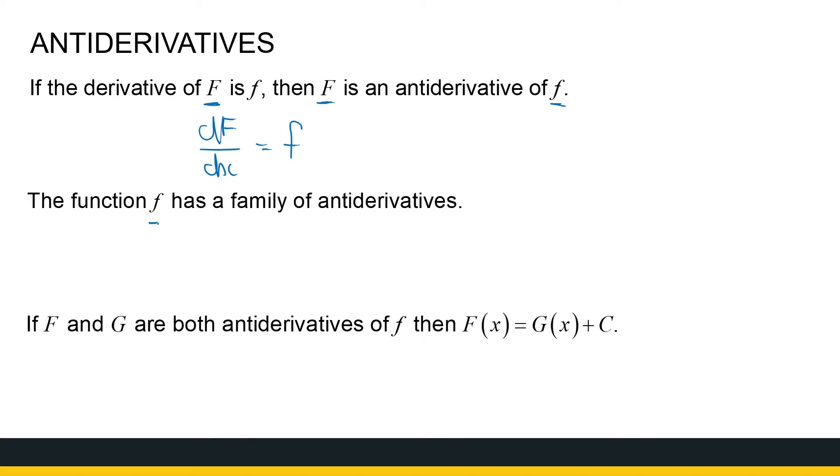Now this function f has a whole family of antiderivatives, which we've seen a couple examples of, but there's an infinite number of them. So if I've got two antiderivatives of a function, they differ by a constant. So that is how they are related.